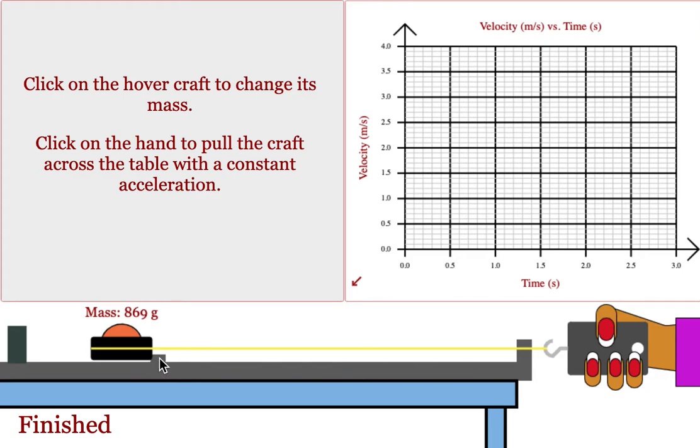You'll notice there's a little block holding the hovercraft in place. You can change the mass by clicking on the hovercraft. These masses are randomly generated, and you'll just cycle through the available masses as you click.